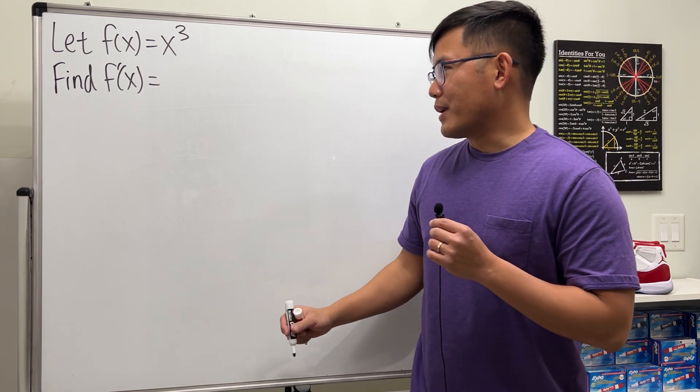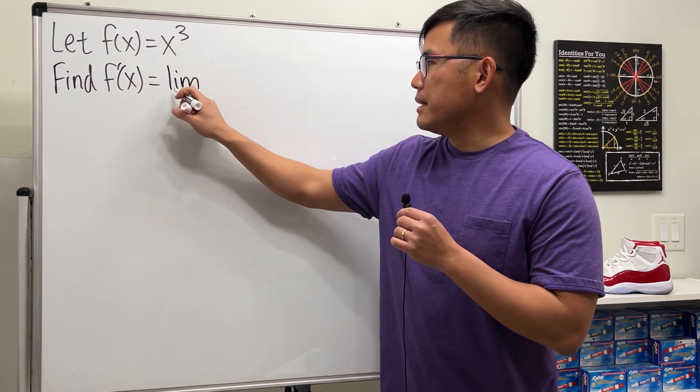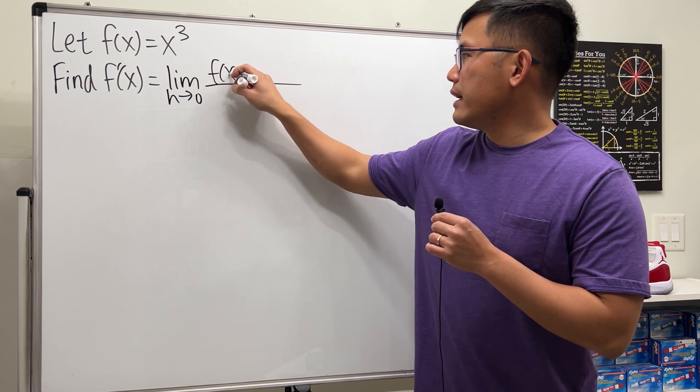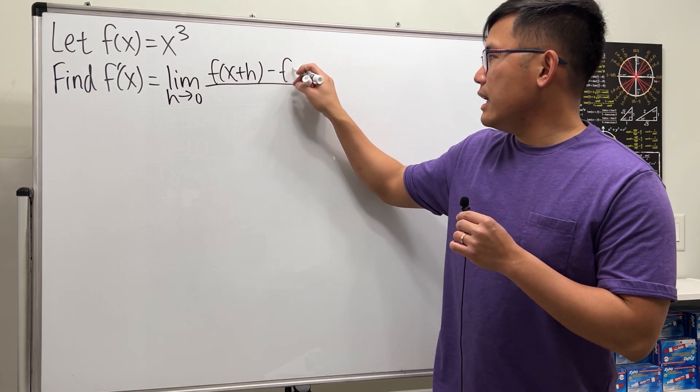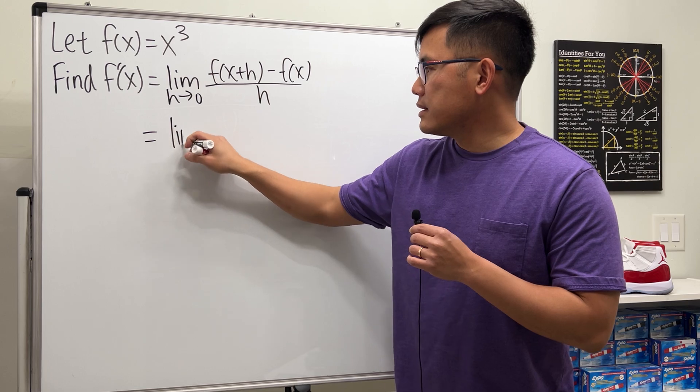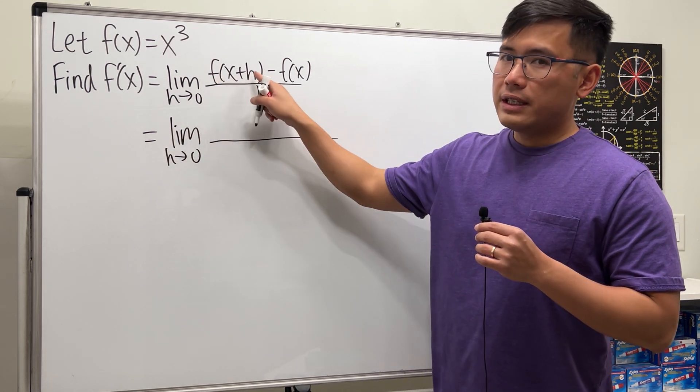Right, so let's have a look. First we have to remember the definition of course: that's the limit as h approaching zero, and then we have f of x plus h minus f of x, all over h.